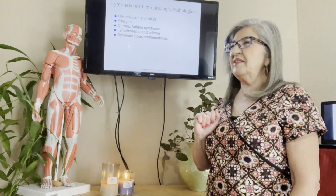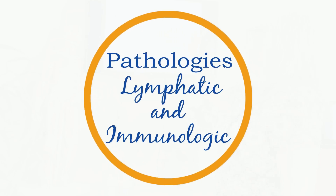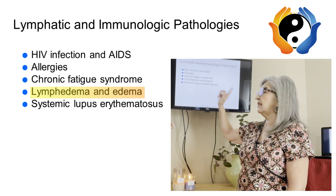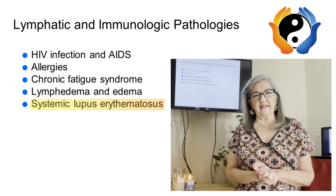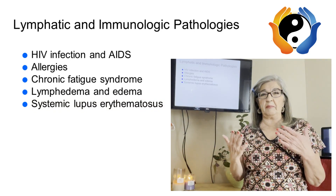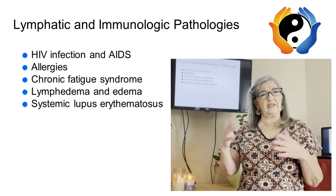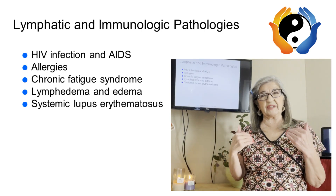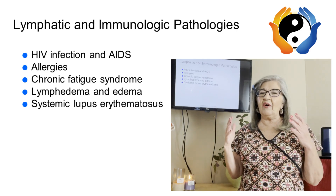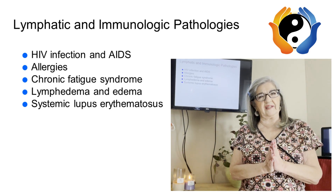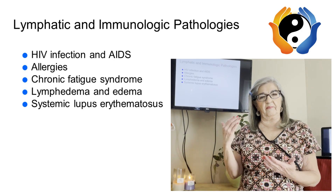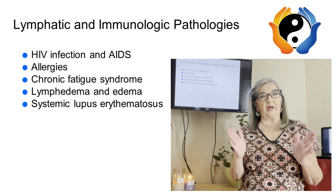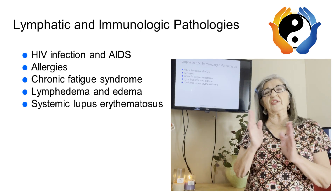Hello everyone, today I'm going to be doing the pathologies of the lymphatic system and the immunologic pathologies. I'll be talking about HIV infection and AIDS, allergies, chronic fatigue syndrome, lymphedema and edema, and systemic lupus. This is just a short review of the pathologies — I committed to doing these for students all over the world, but I'm not going deep into all of them. Just the basics, since videos don't do well if they're too long.